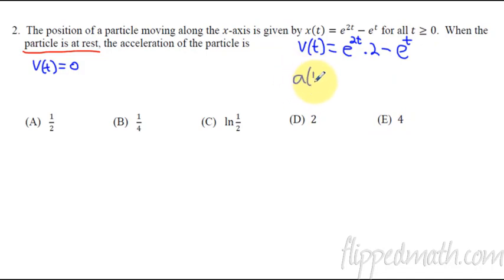Acceleration, because we're going to need that one as well, is going to equal, so now this is e raised to the 2t times 2 times another 2, so it's going to be times 4 minus e to the t. All right, again, it wants us to know when is velocity going to equal zero. So I'm going to take this equation right here. I'm going to write it down here.